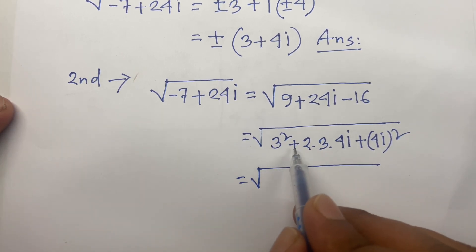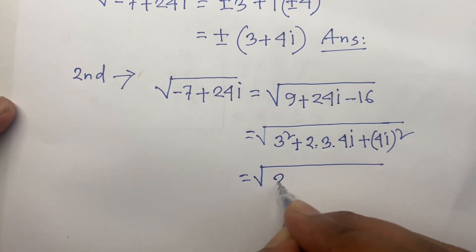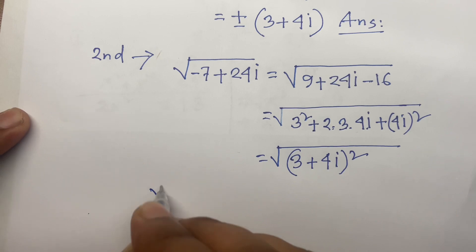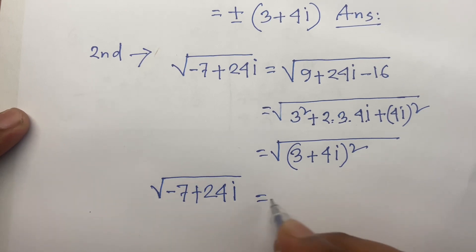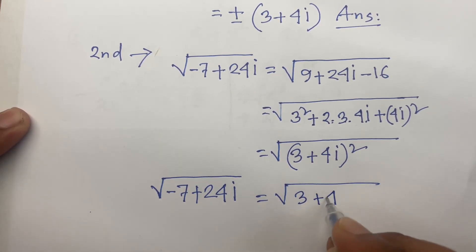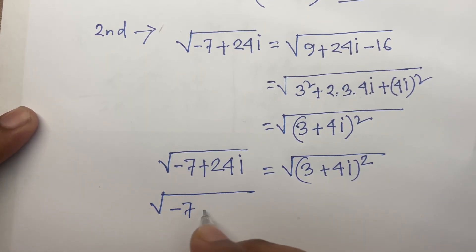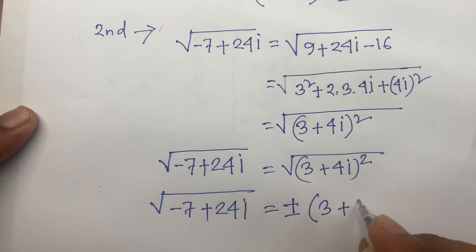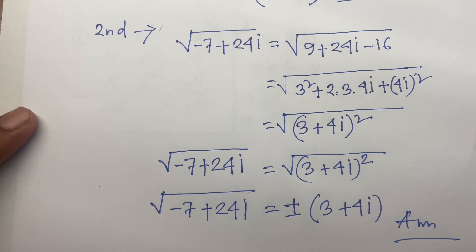Recognising a² plus 2ab plus b² equals (a + b)², we have 3² plus 2·3·4i plus (4i)² equals (3 + 4i)². Therefore square root of (−7 + 24i) equals square root of (3 + 4i)², and the square root cancels to give plus or minus (3 + 4i). Thank you all — if you enjoyed this video please subscribe and comment which method is easier. Goodbye.